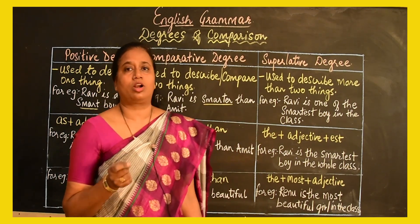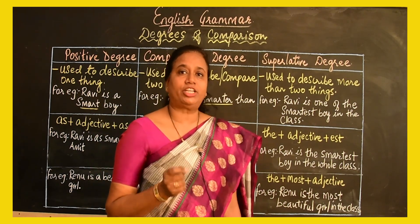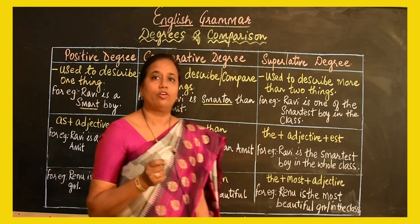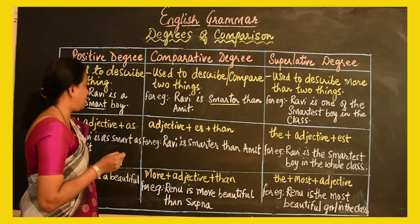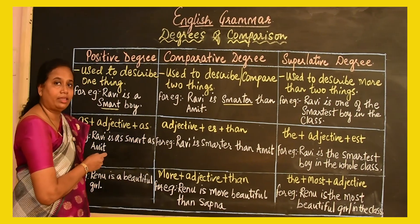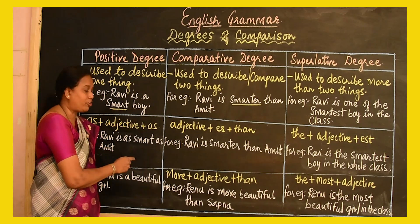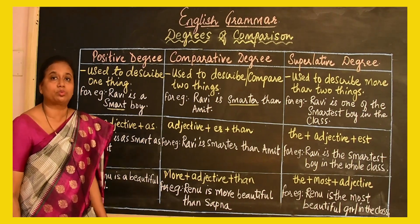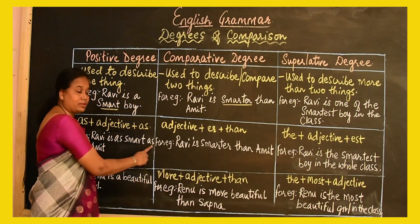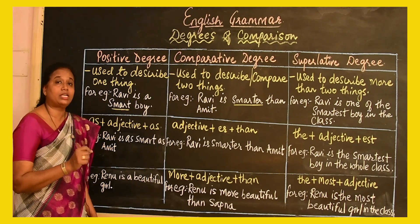Another rule we need to understand is that the adjective changes depending on whether it is a regular or an irregular adjective. For regular adjectives in the positive degree, the syntax is: as + adjective + as. For example, before and after the adjective 'smart,' we use the word 'as.' So we say 'Ravi is as smart as Amit,' describing Ravi.